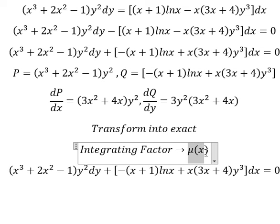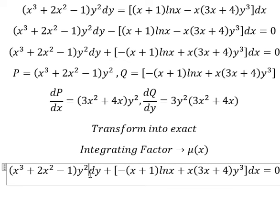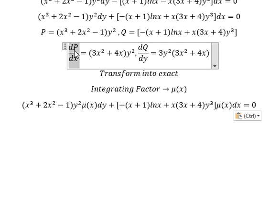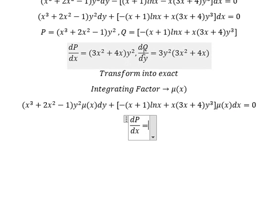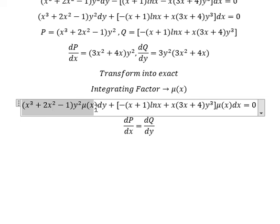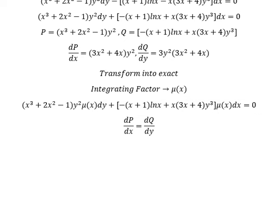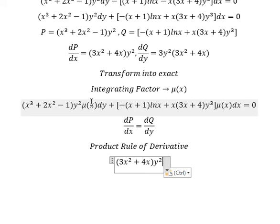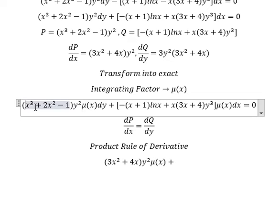With the integrating factor, we need to multiply by μ(x) here and here. Now we want to create dp over dx equals dq over dy. So p in this situation is about x³ + 2x² − 1 times y squared times μ(x). We can apply the product rule of derivative — we do the first derivative of this one, put the value of μ(x) and x, then do the first derivative of μ(x) and keep this one here.